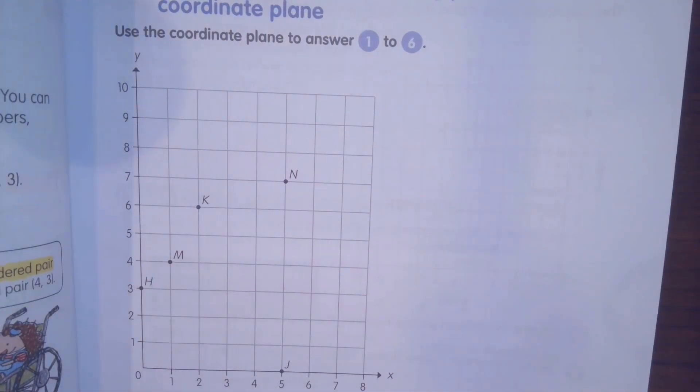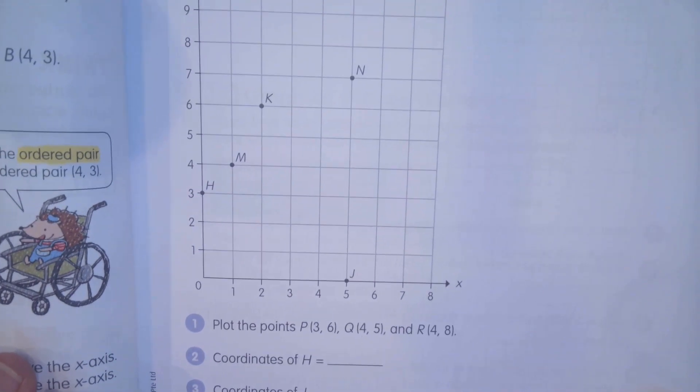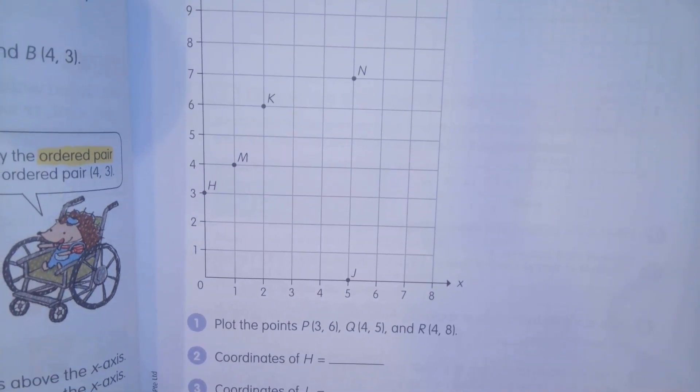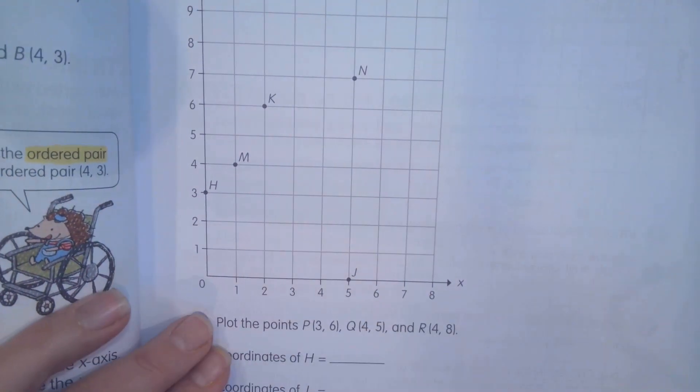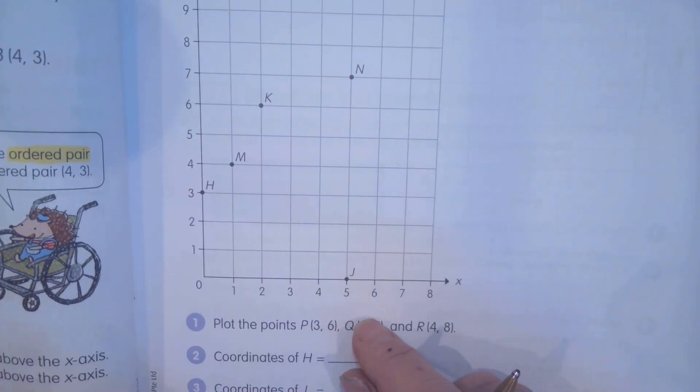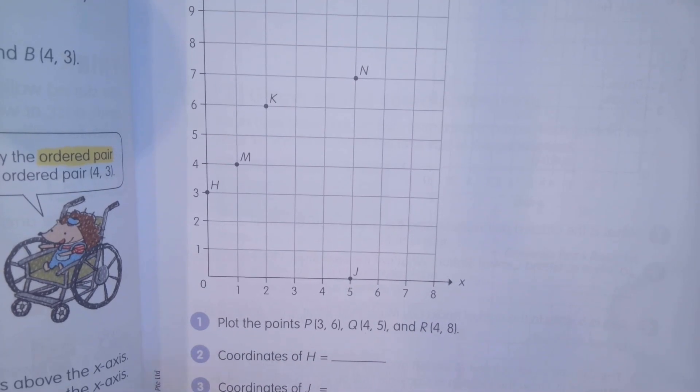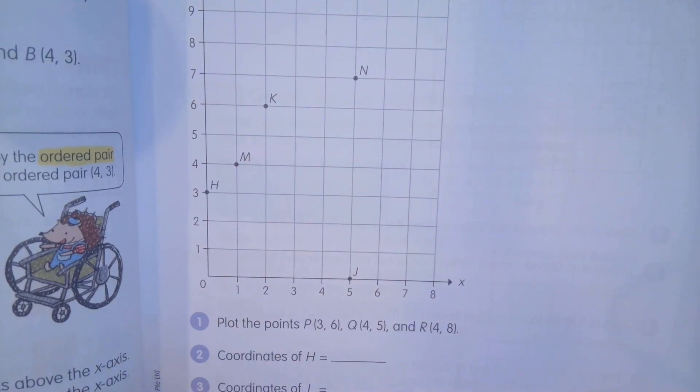Sometimes they're going to give you the coordinates, and then you have to do the graph. But in this case, they did the graph, and you have to give them the coordinates. So let's try to figure out, what do you think the coordinates are of this right here? What do you think h is? 0 and 3.